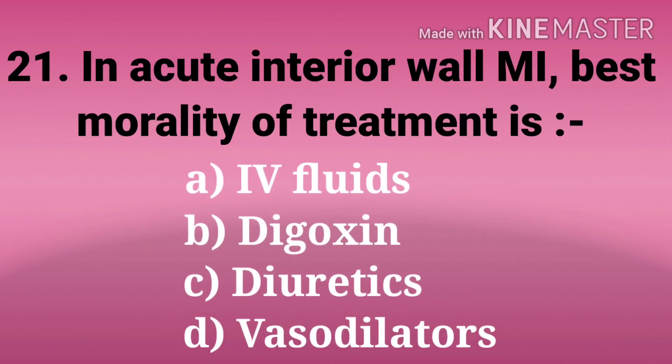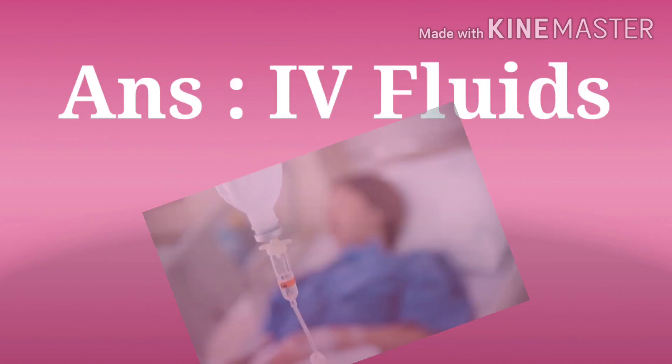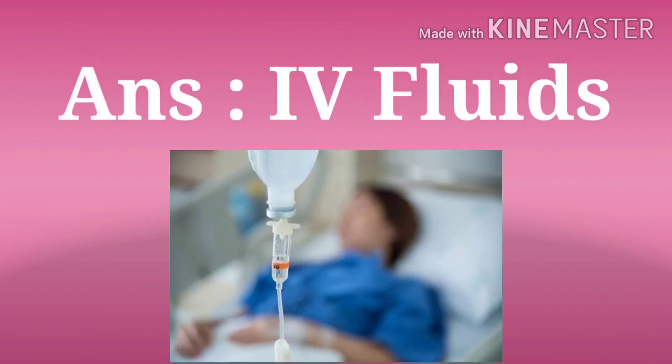Next question: in acute inferior wall MI, best modality of treatment is. The options are IV fluid, digoxin, diuretics, and vasodilators. The answer is IV fluids. Inferior wall MI occurs due to right coronary artery injury or thrombosis. In anterior wall MI, the left anterior descending artery is affected; pulmonary edema will occur, so fluid restriction is given for a patient with anterior wall MI.